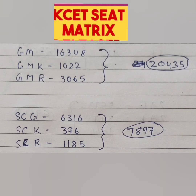After this comes the general merit category. Students who do not belong to any category fall under general merit. General merit also has 3 sub-categories. Standard general merit has the maximum seats — 16,348 seats — and most of you will belong to this category. Within general merit there is also GMK for Kannada medium students with 1022 seats, and GMR with about 3000 seats. So total general merit seats available is around 20,000.